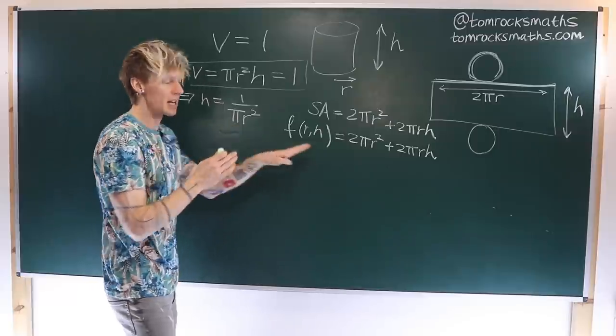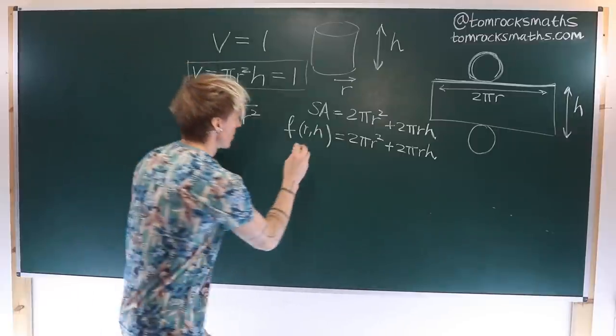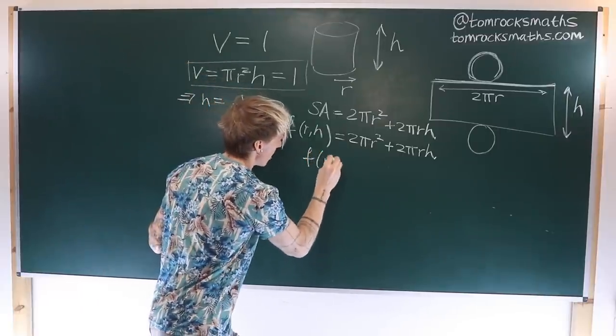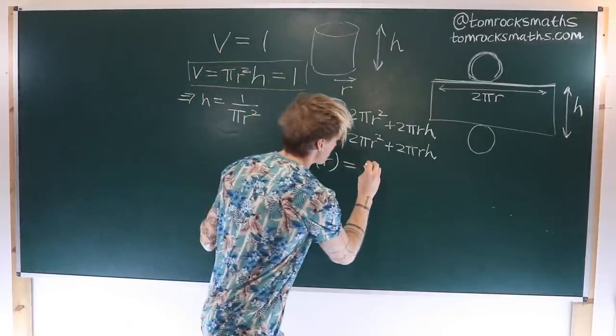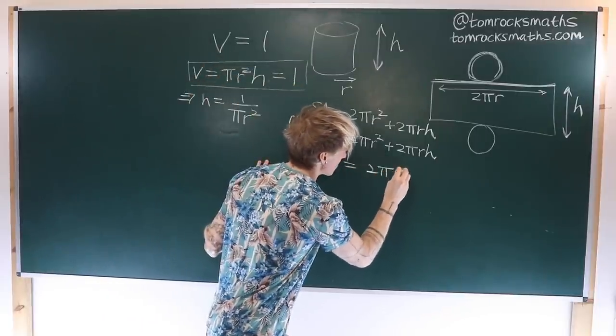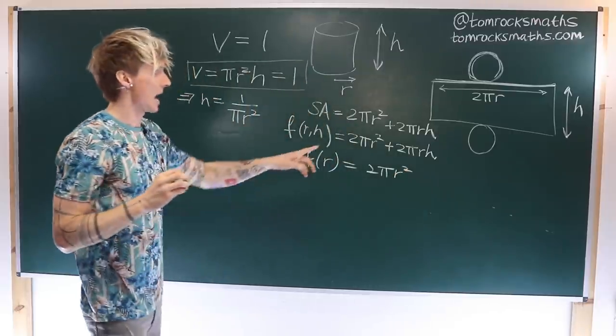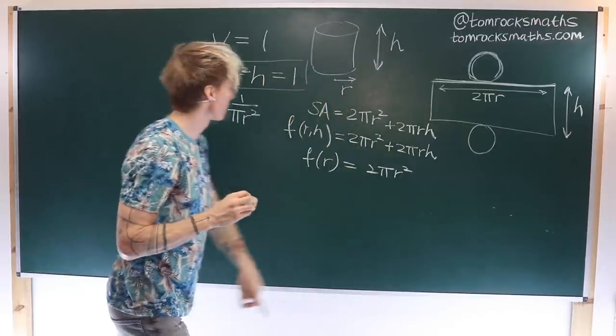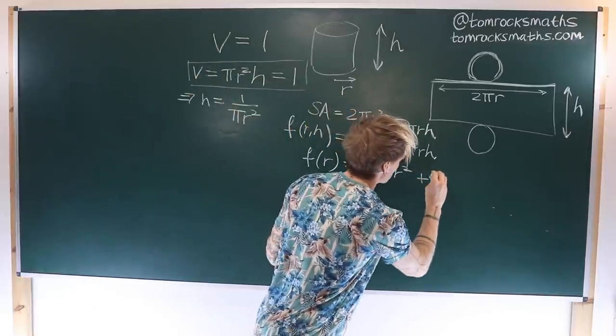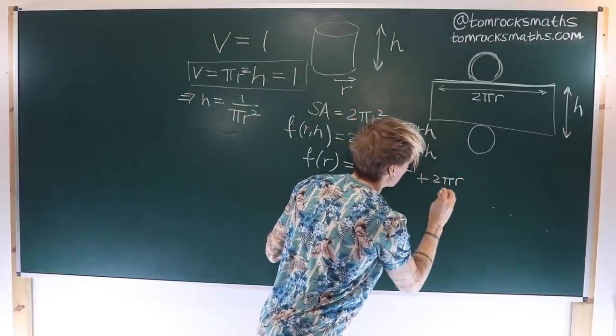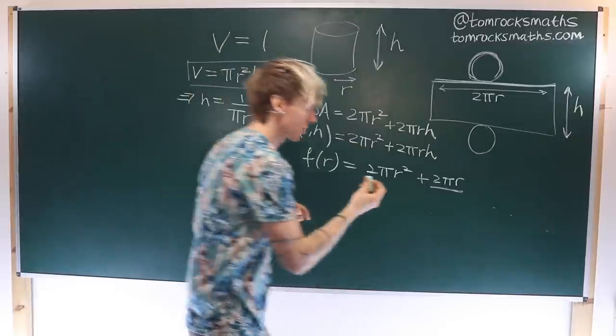So now substituting this into our equation, we now get a function of r only. We can say that f(r) is equal to 2πr² and then plus 2πr divided by πr².